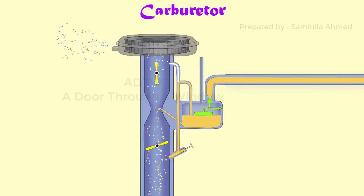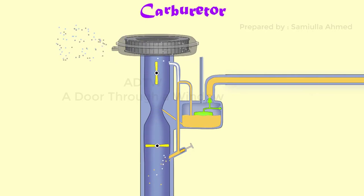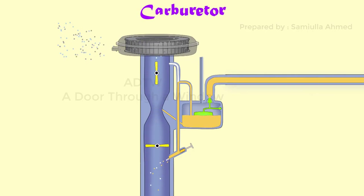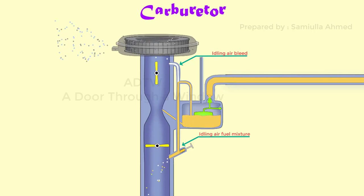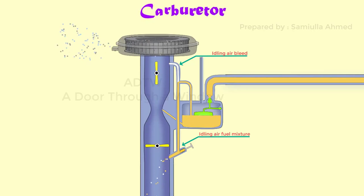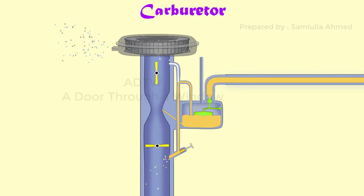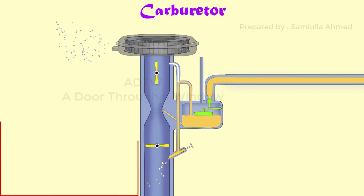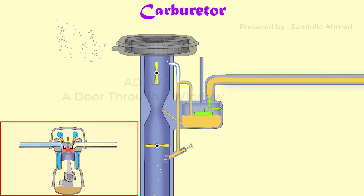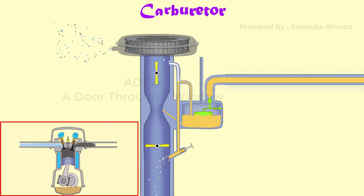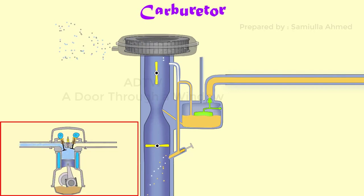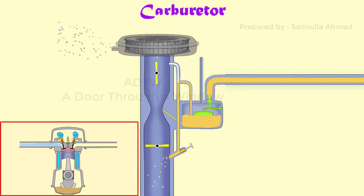If the throttle is fully closed, no air will flow through the venturi. In this case, the idler air bleed will supply sufficient fuel-air mixture so that the engine is idling. Idling means, in other words, to keep the engine in a running condition when the vehicle is not in motion.